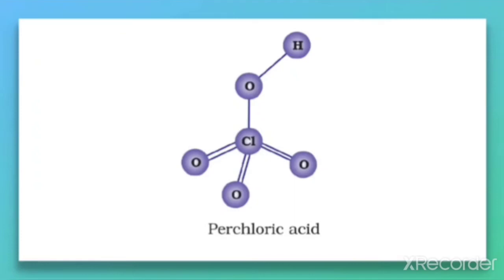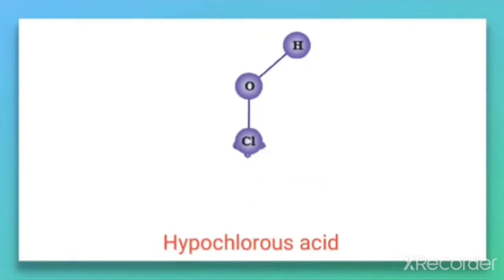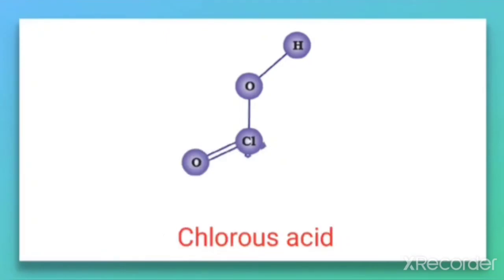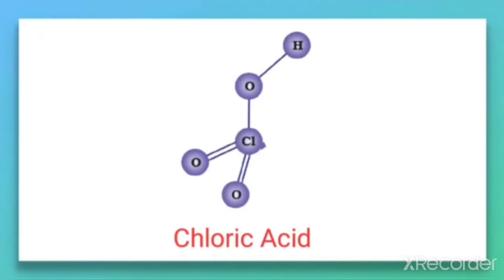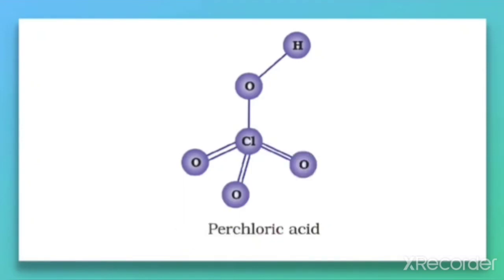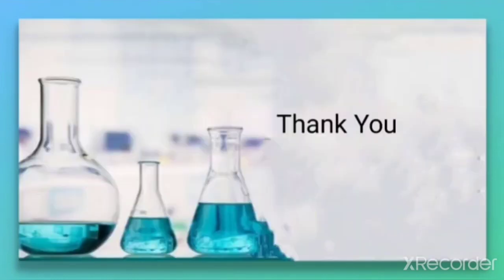To summarize drawing the structures: start with hypochlorous acid (H-O-Cl), then add one double-bonded O on chlorine for chlorous acid, one more for chloric acid, and one more for perchloric acid. In this way, you can very easily draw the structures of all oxoacids of chlorine by progressively adding double-bonded oxygen atoms.